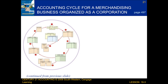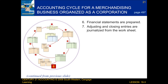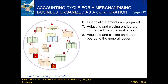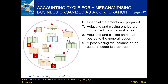Continuing on to the last slide, the next step is that financial statements are prepared. After that, adjusting and closing entries are journalized from the worksheet. Following that, the adjusting and closing entries are posted to the general ledger. And finally, a post-closing trial balance of the general ledger is prepared.